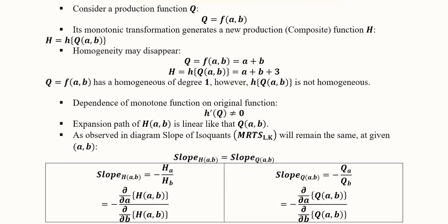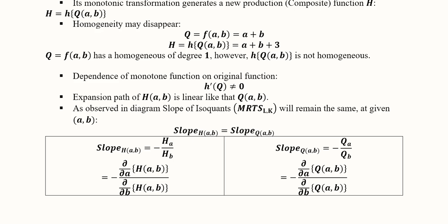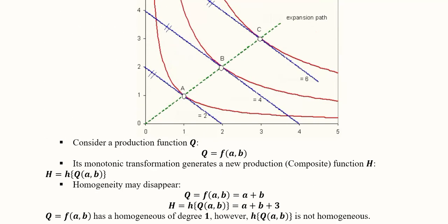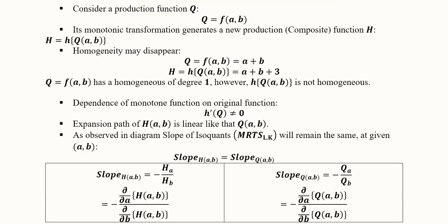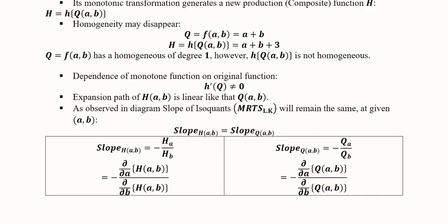Let us verify this. We have the monotonically transformed function and the original function. The expansion path of the homothetic function will be the same as the expansion path of the original function, because it retains the patterns. So it is natural to retain the expansion path pattern of the original function. As observed in the diagram, the slope of the isoquant will remain the same. MRTS is basically the slope, and here we can check the slopes of the two functions — the monotonically transformed function and the original function.